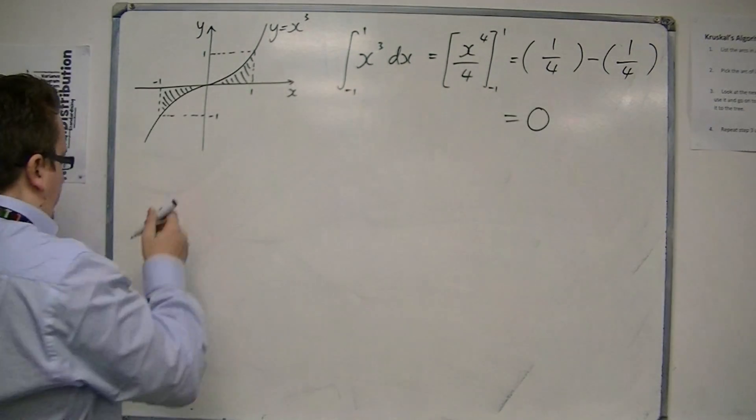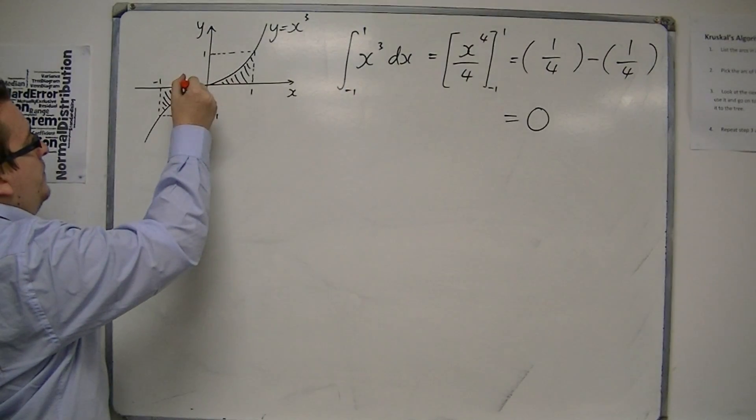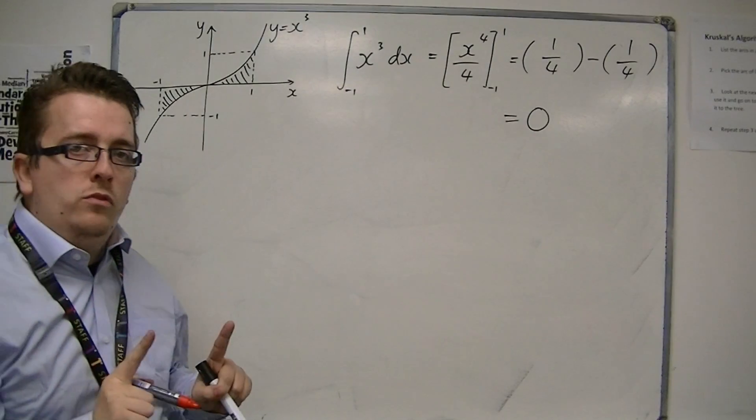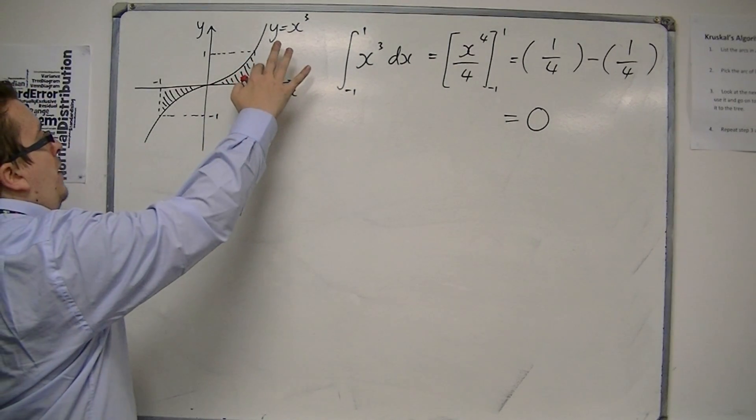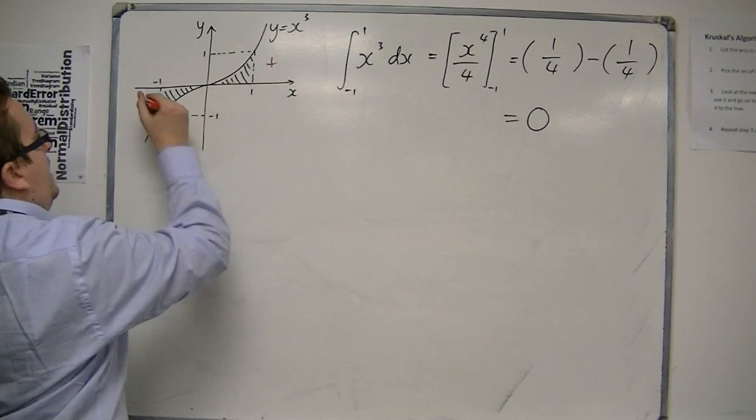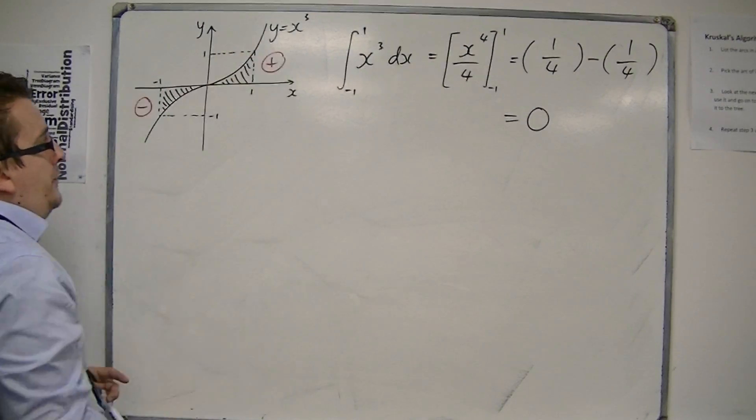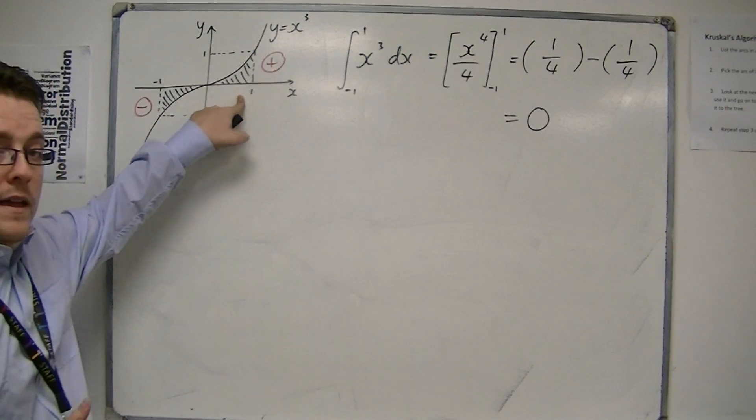Because this area is below the x-axis, that means the integral is negative. It is positive when it is above the x-axis, but negative when it's below. And so the area that I have there is cancelling out the area that I have there.